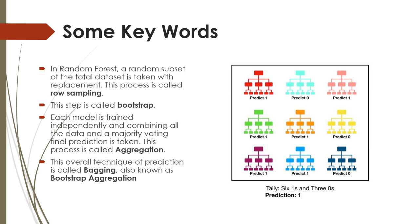Now we're going to learn about a few keywords associated with random forest, so that if you hear these words or are in an interview talking about random forest you can use the right keywords. Random forest takes different subsets of the total dataset with replacement — this process is called row sampling, and the step of taking this subset of the dataset is called bootstrap. The process of aggregating the results of individual decision trees and taking the majority vote is called aggregation. The overall technique is actually called bagging, which is also known as bootstrap aggregation.